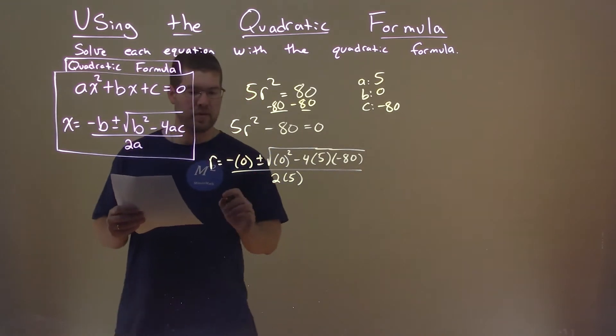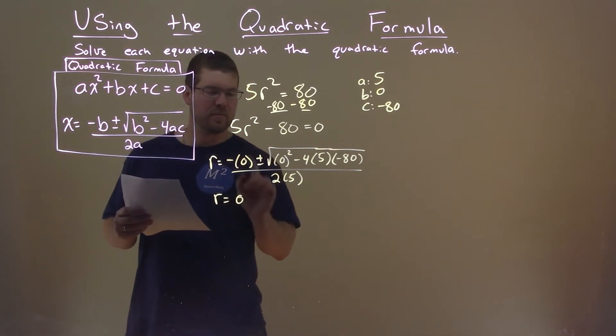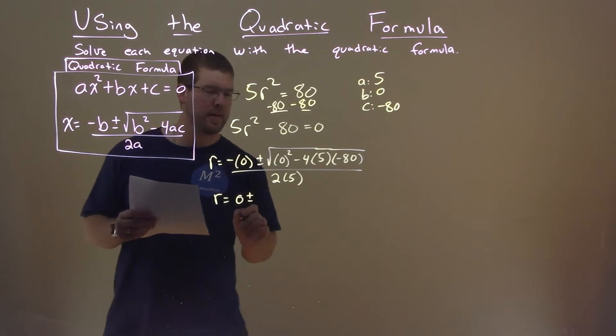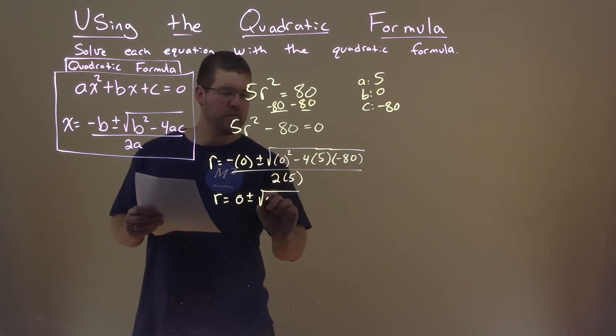So now let's simplify this. Negative 0 is just 0, I'll keep it there as a place value, just for one more time. Square root, well, 0 squared is 0.